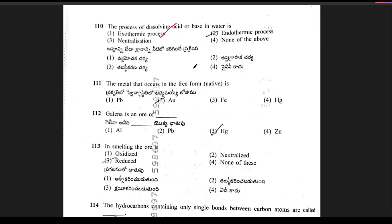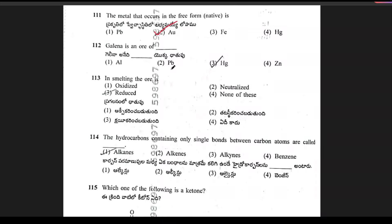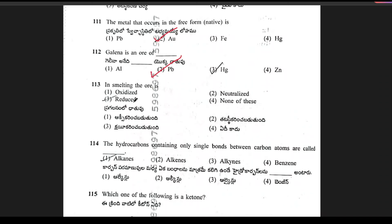The metal that occurs in the free form is Au, gold or silver. Next, galena is an ore of? Options are Al, Pb, Hg, Zn. It is Pb. In smelting the ore is oxidized, neutralized, or reduced? That is reduced.